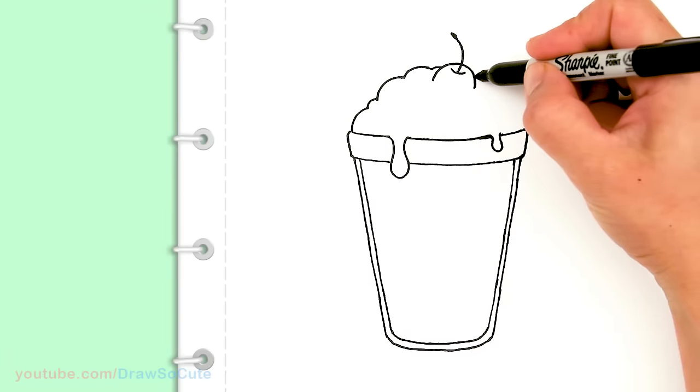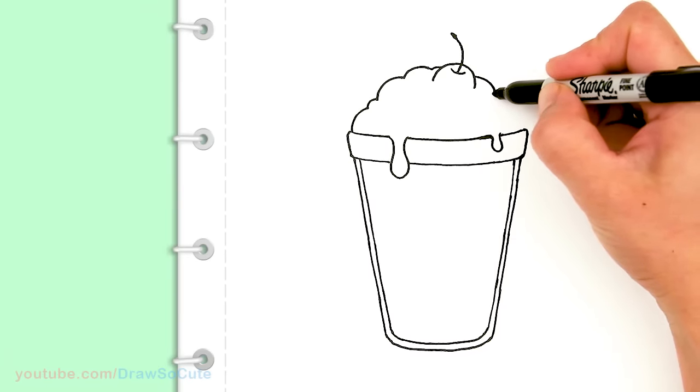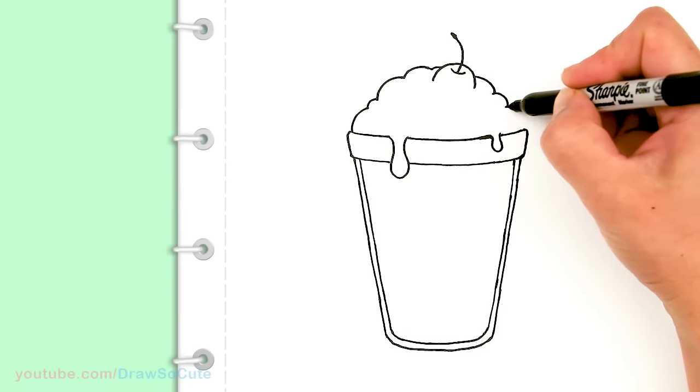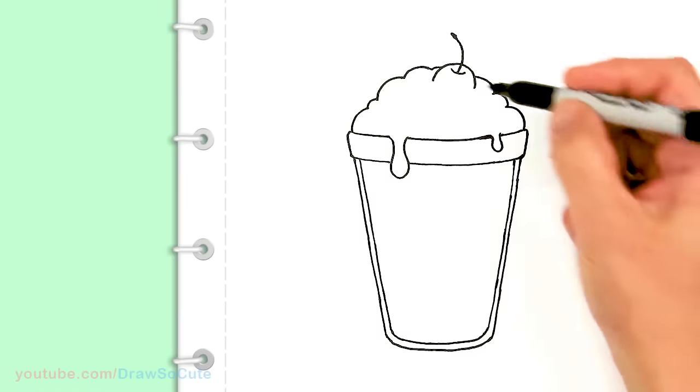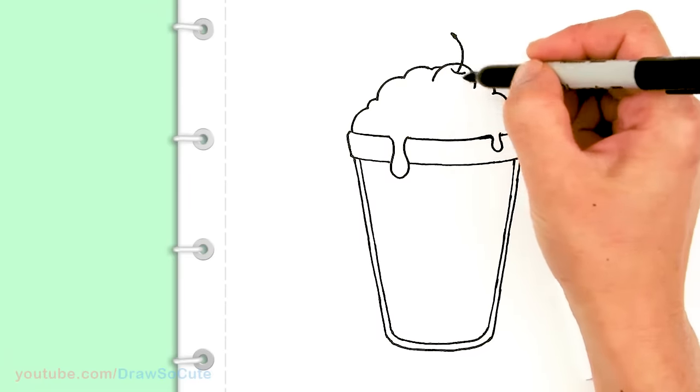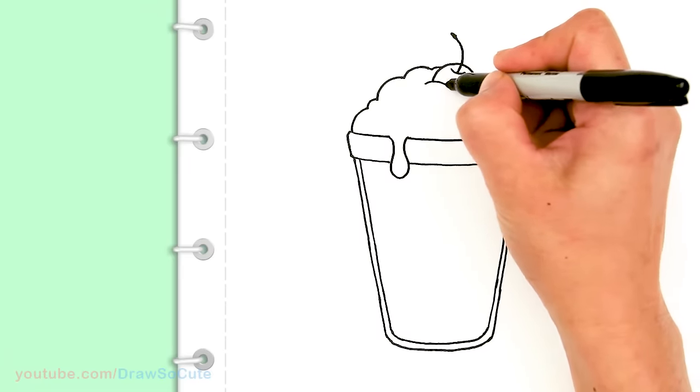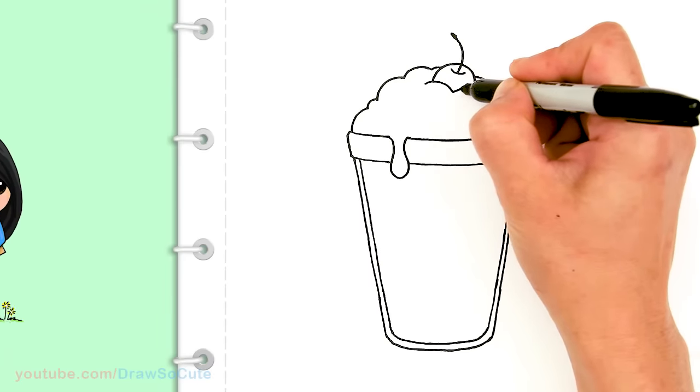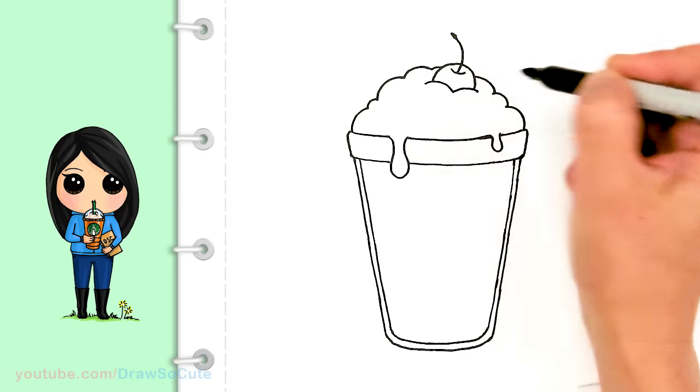Let's finish it up right here. And bring it back onto this side. And so right here let's finish off this cherry. I'm just going to add two curves right under it. So it looks like the cherry is tucked inside.